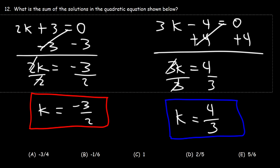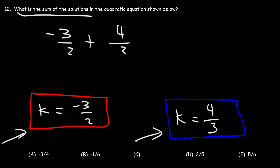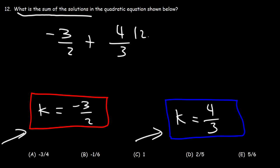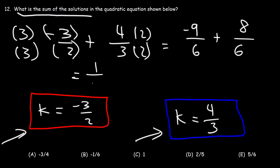Now there's one last thing to do. Going back to the problem, it asks for the sum of the solutions. So we add negative 3 over 2 plus 4 over 3. We need a common denominator — 2 times 3 is 6. Multiplying the first fraction by 3 over 3 gives negative 9 over 6, and the second by 2 over 2 gives 8 over 6. Negative 9 plus 8 is negative 1, so the sum is negative 1 over 6.